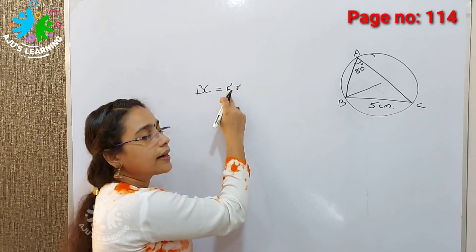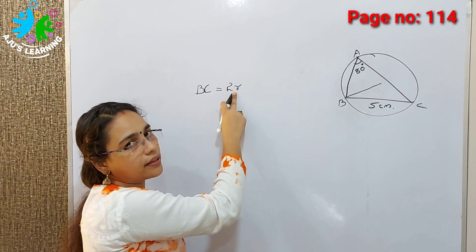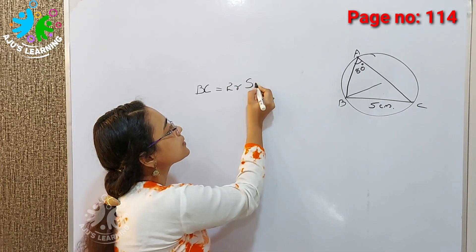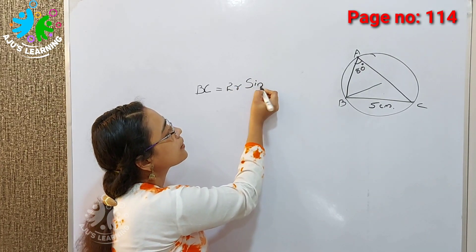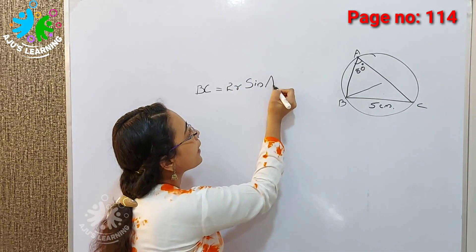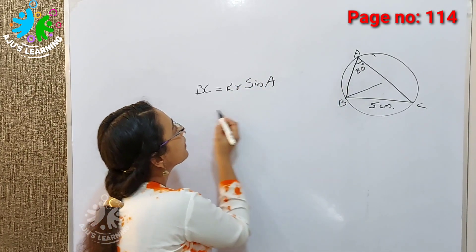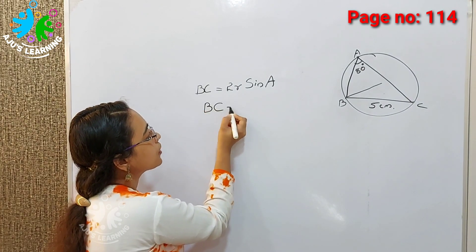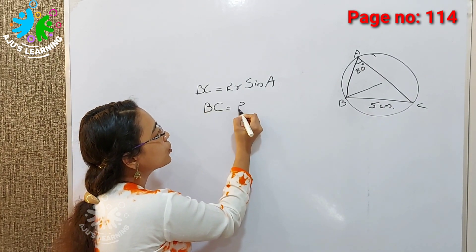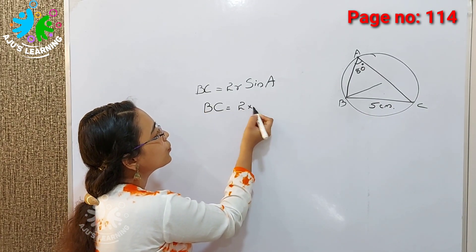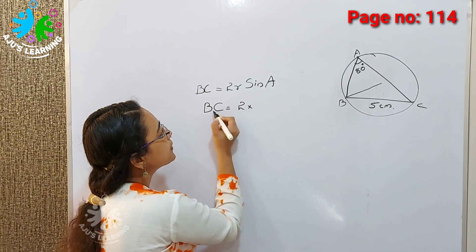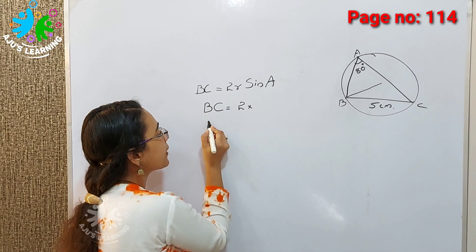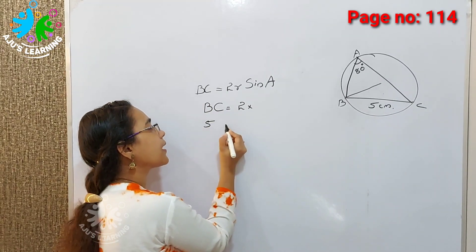Using the formula: 2R sine A. BC equals 2 into R into sine A. BC is 5 cm.